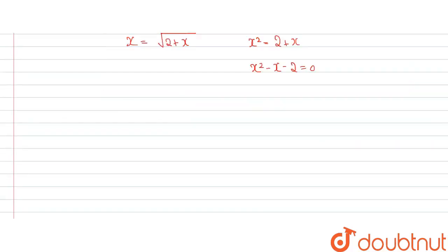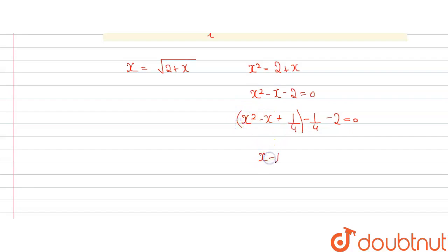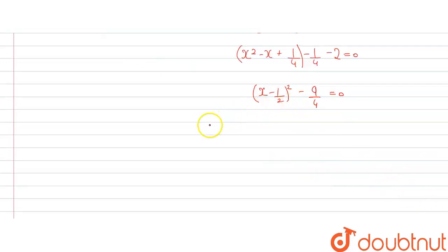On further solving, we complete the square by adding and subtracting 1/4. So we get x² − x + 1/4 − 1/4 − 2 = 0, which gives us (x − 1/2)² − 9/4 = 0.